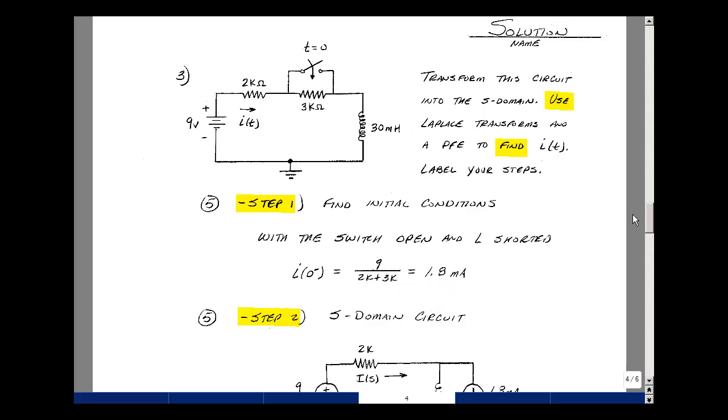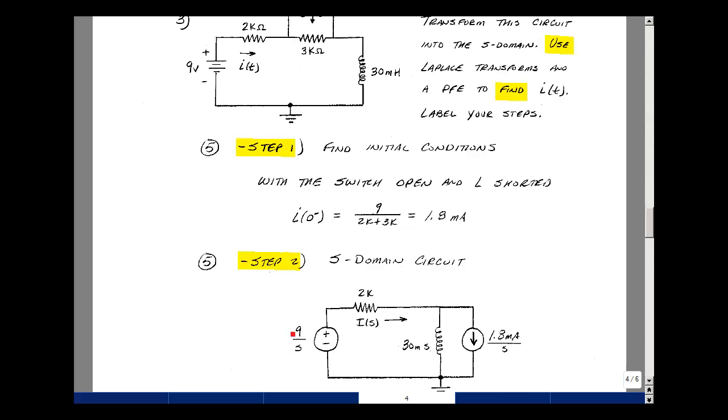So step two, transforming into the S domain, the switch is going to be closed at T equals 0, and we basically are applying a step voltage with a series resistance of 2k. We'll model that 9 volts as 9 over S with a 2k. I(t) becomes I(s), and our inductance becomes 30 mH times S, and then our initial condition is flowing in this direction, and so I use a current source as a step function of 1.8 mA divided by S.